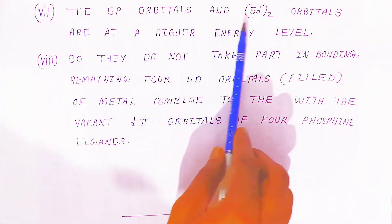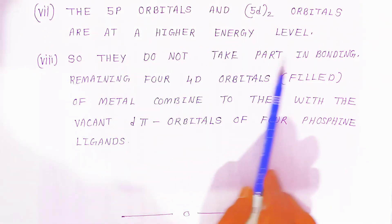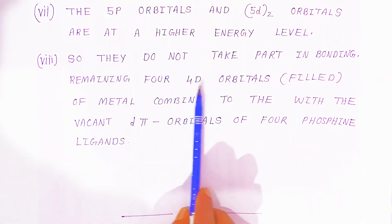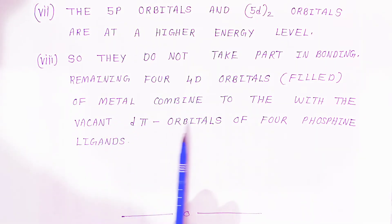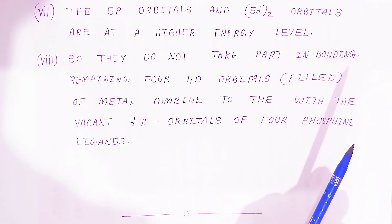The 5p orbitals and 5d orbitals are at a higher energy level, so they do not take part in bonding. The remaining four 4d orbitals, which are filled orbitals of metal, combine with the vacant d-pi orbitals of the four phosphine ligands and they will form the bonds. This is how you can explain the bonding in the complex.